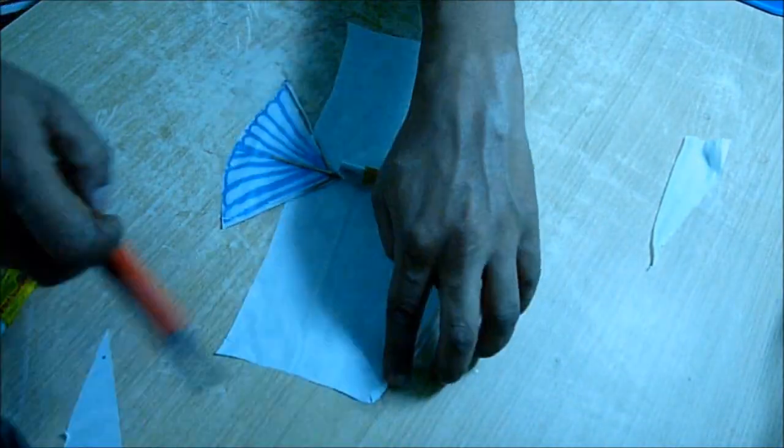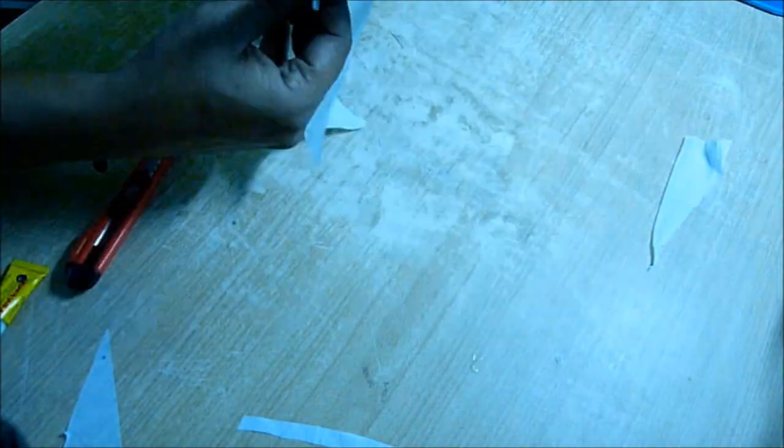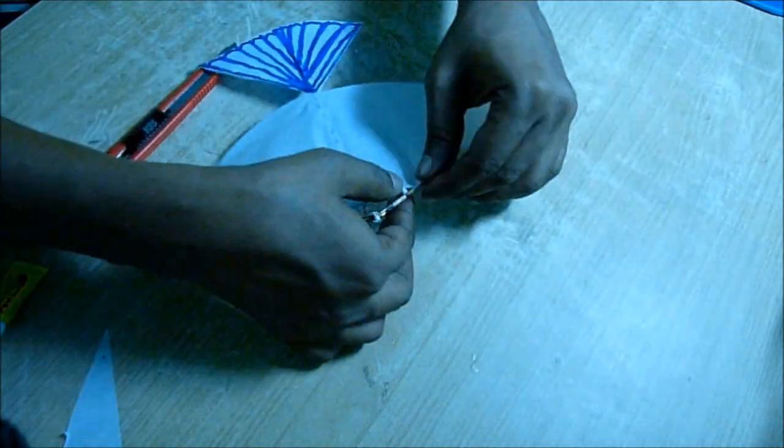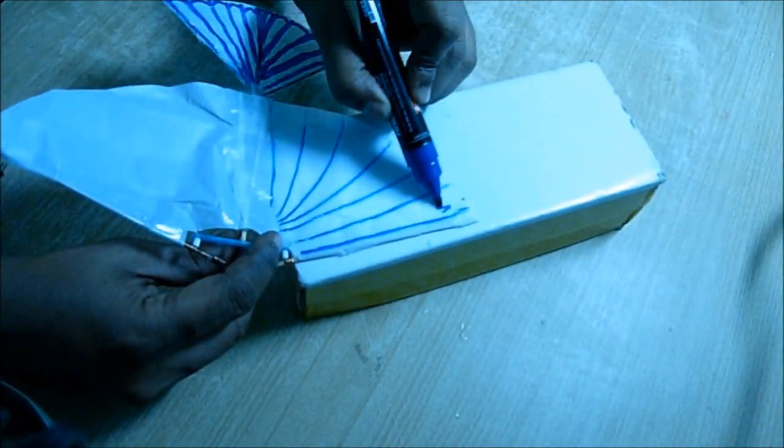To glue the frame with the plastic wing, you can draw feathers with the marker like this.